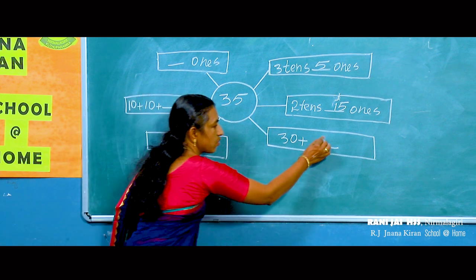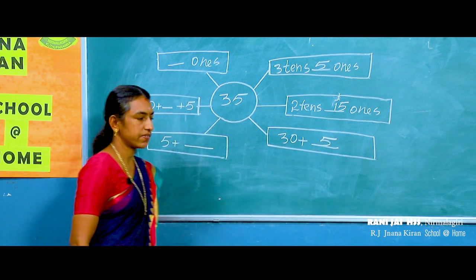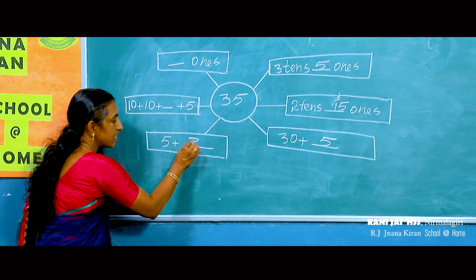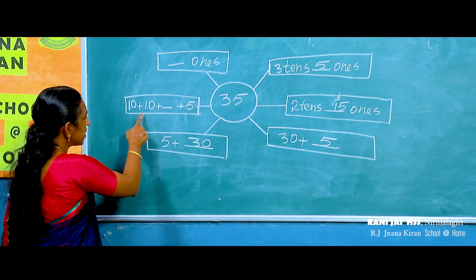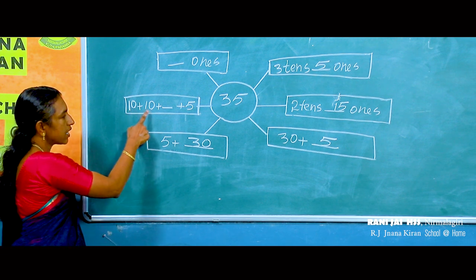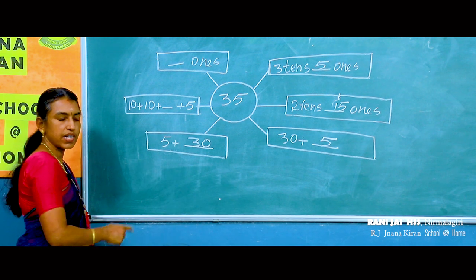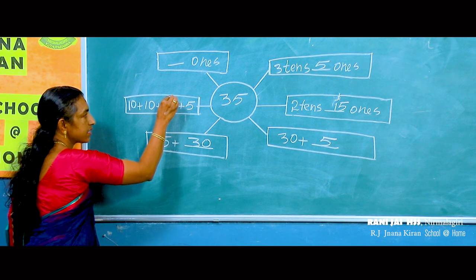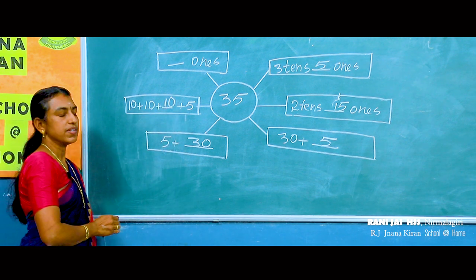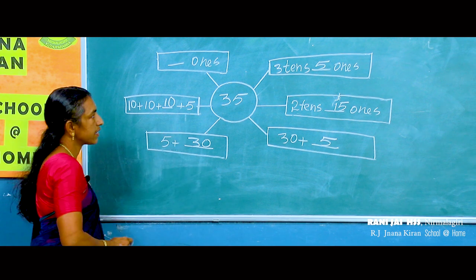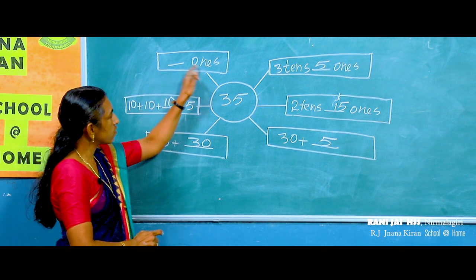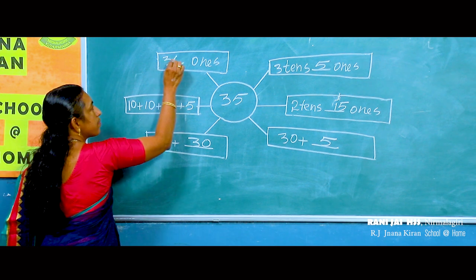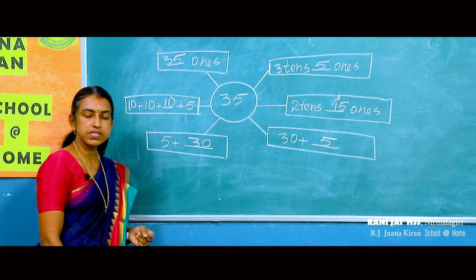Look at the third one: thirty plus what? Good — thirty-five is equal to thirty plus five. Then: five plus what? Answer: five plus thirty. Next: ten plus ten plus ten plus what plus five? Ten plus ten is twenty, twenty plus ten is thirty, thirty plus five is thirty-five. Last one: how many ones make thirty-five? Thirty-five ones make thirty-five.